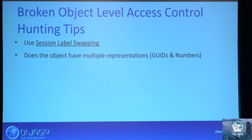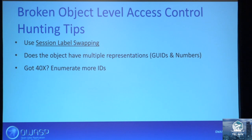Ask yourself if the object has multiple representations like GUID and numbers. If you get an authorization error, try enumerating more IDs. In many cases, access control mechanisms are implemented in a weird way — some objects are vulnerable and some are not.